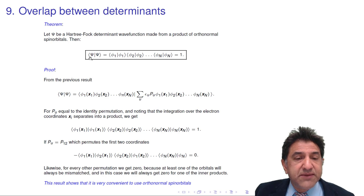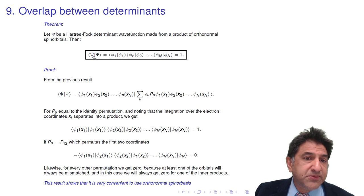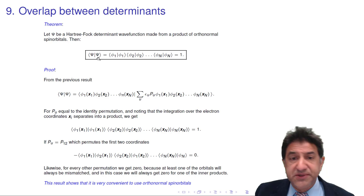is equal to the product of the individual overlaps of each orbital that makes up this product wave function, this anti-symmetrized product wave function.